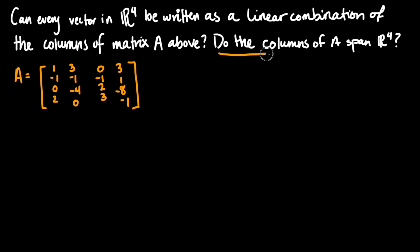We're asked: do the columns of A span R4? Essentially these two questions are the same. Can every vector in R4 be written as a linear combination of the columns of matrix A? Do the columns of A span R4? We need to be aware of a theorem in order to figure this out.